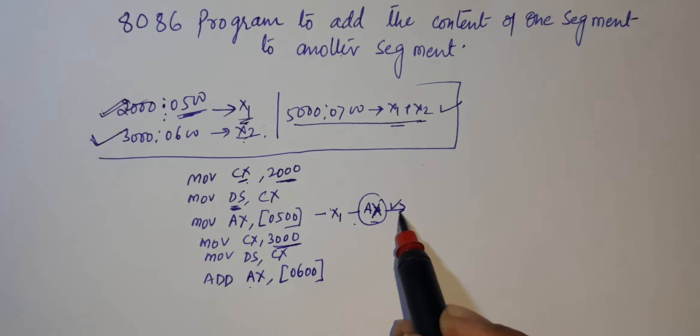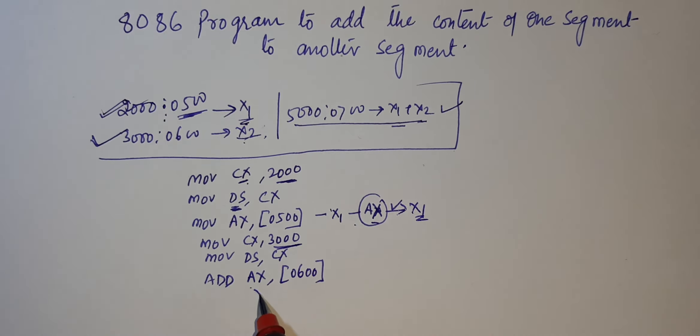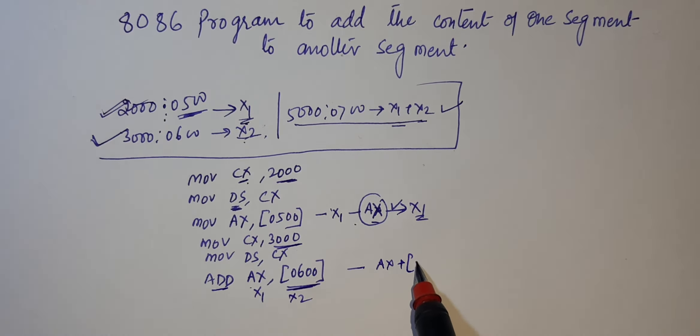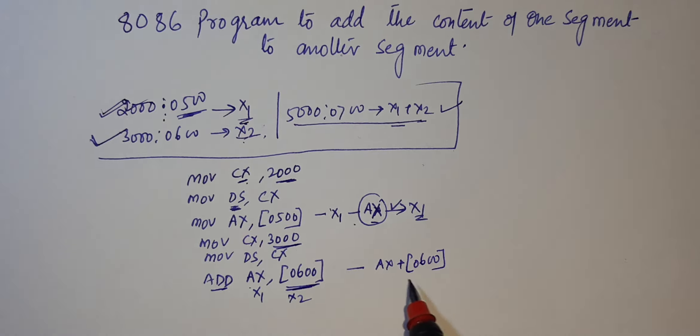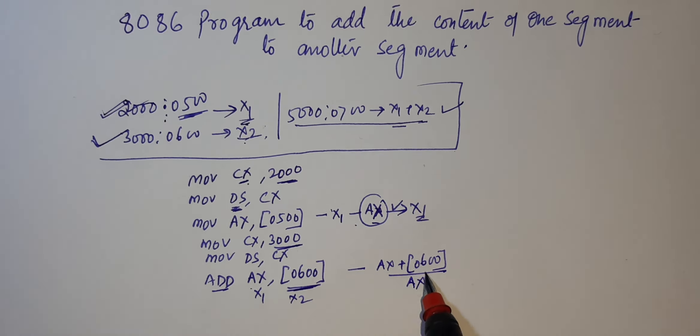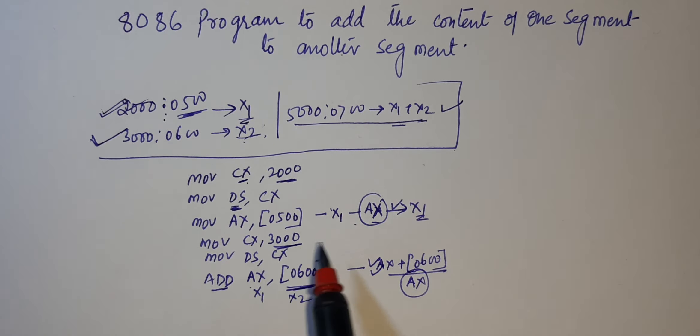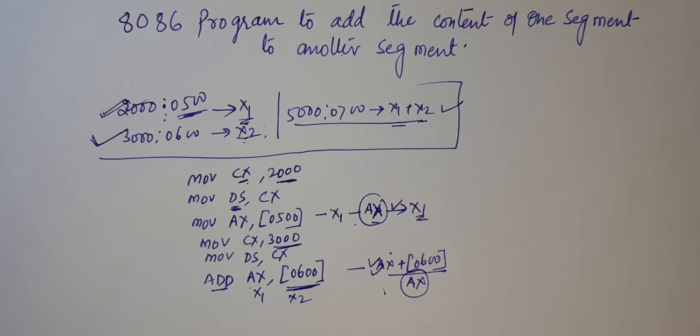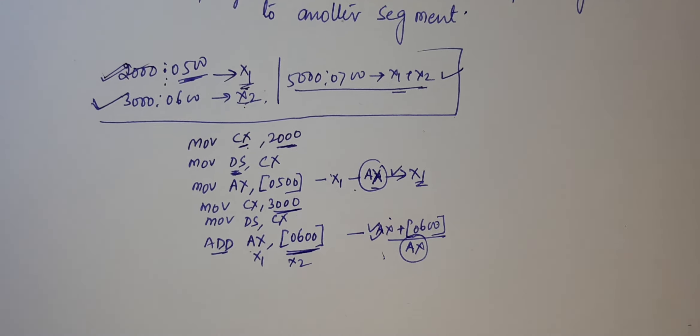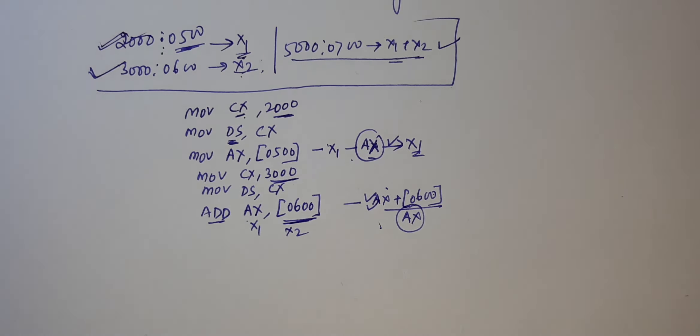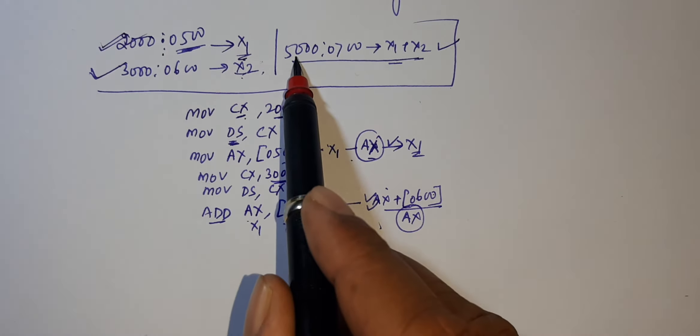What will happen? Who will be represented? ADD AX, and by default output will be stored in the destination. Here we have added X1 plus X2, both of our segments.